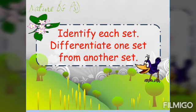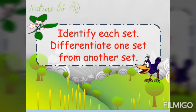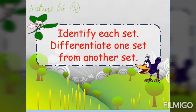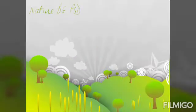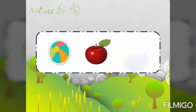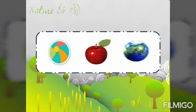Identify each set. Differentiate one set from another set. So there are three objects. These are ball, apple, and globe.